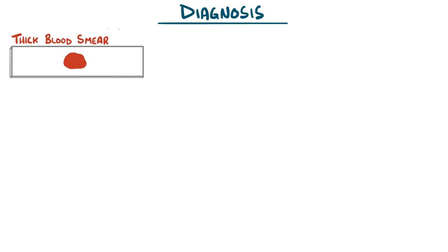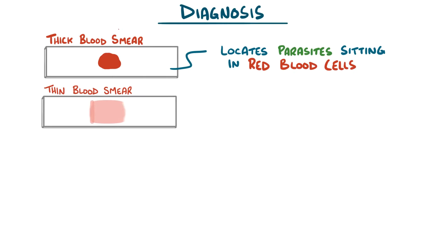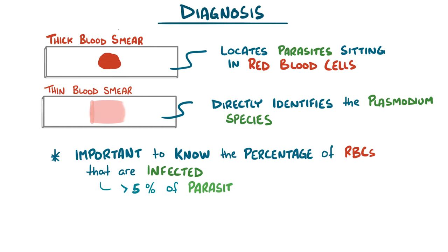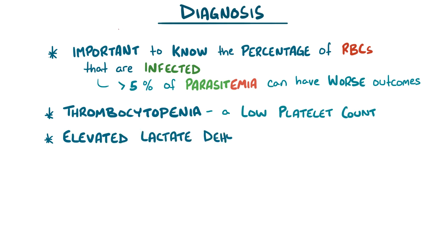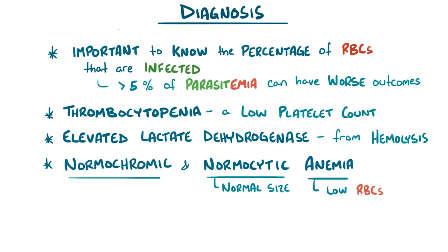Malaria is usually diagnosed with a thick blood smear that locates parasites sitting within the red blood cells, and a thin blood smear, which directly identifies the plasmodium species. It's also important to know the percentage of red blood cells infected by a parasite, because patients with greater than 5% parasitemia can have worse outcomes. Some common lab findings include thrombocytopenia — a low platelet count — elevated lactate dehydrogenase levels due to hemolysis, and a normochromic, normocytic anemia, meaning the red blood cells are few in number but those that remain are of normal size and color.